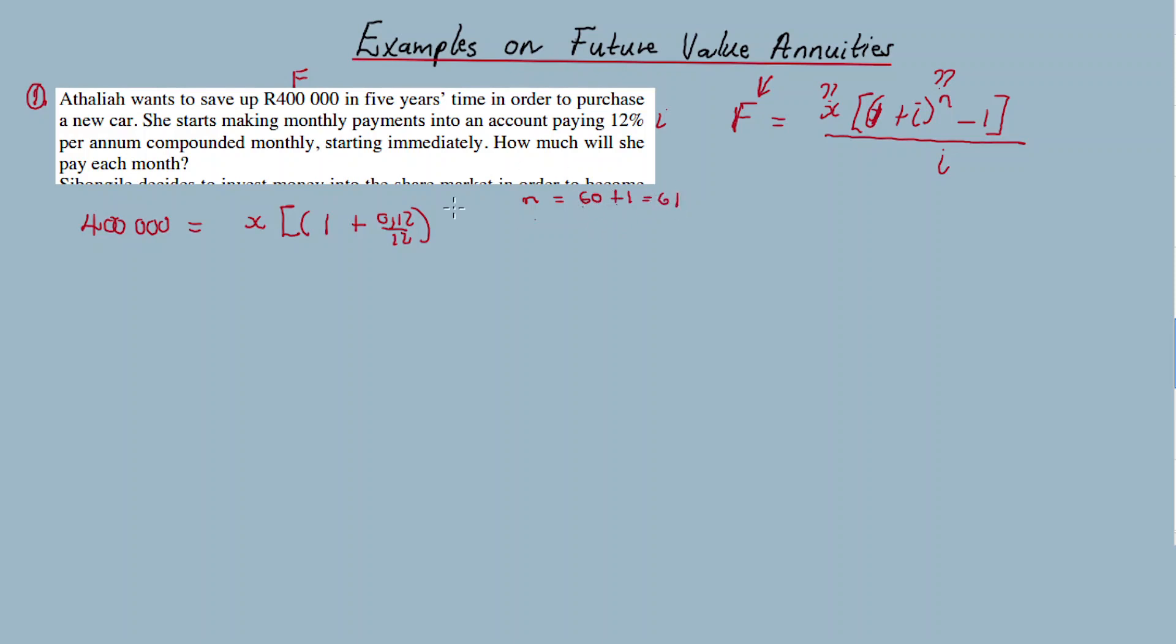So 60 plus one is 61. Remember the timeline: there's a straight line timeline with T0, T1, T2, all the way up to T60. I make the first payment X at each time, all the way up to 60. If I start counting from T1 to T60, in total n equals 60. But because I made the first payment immediately, I start counting from T0, so that's why we add one. If we count from T0, I'll end up with T61, so n is going to be 61.